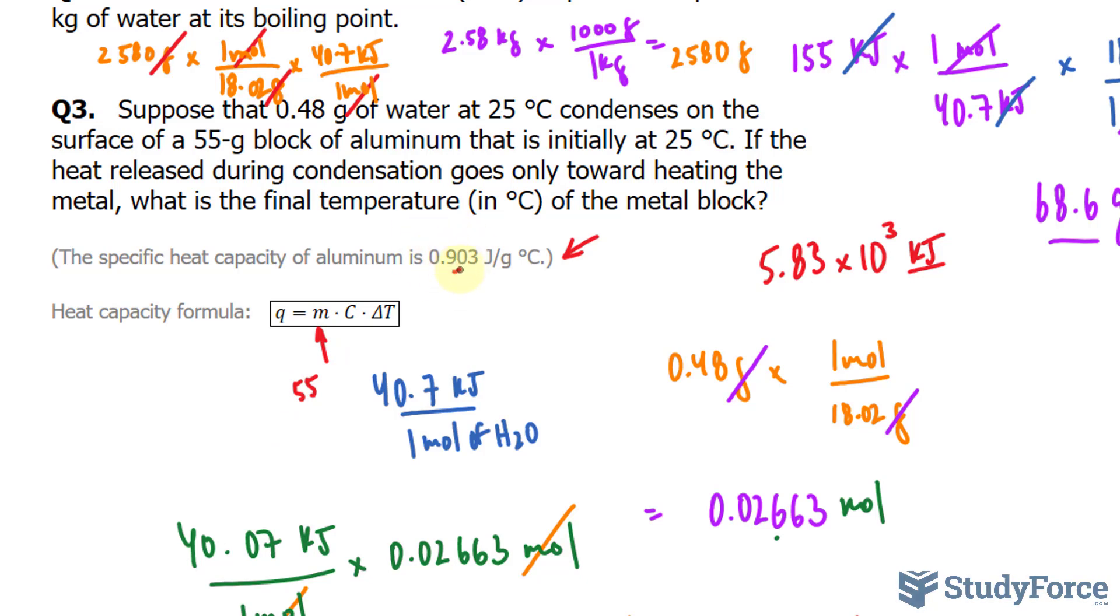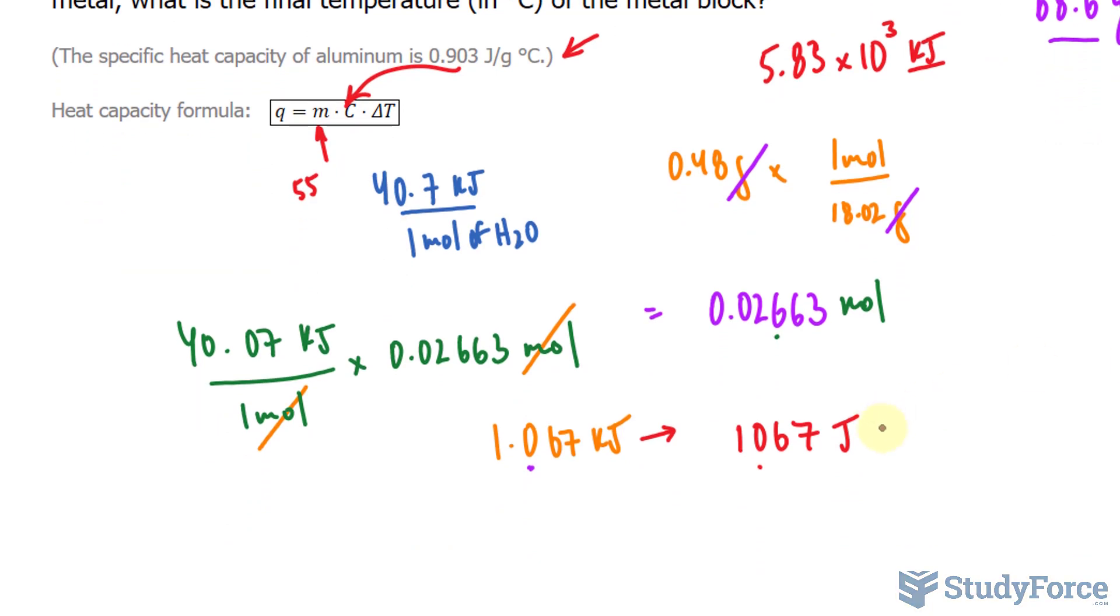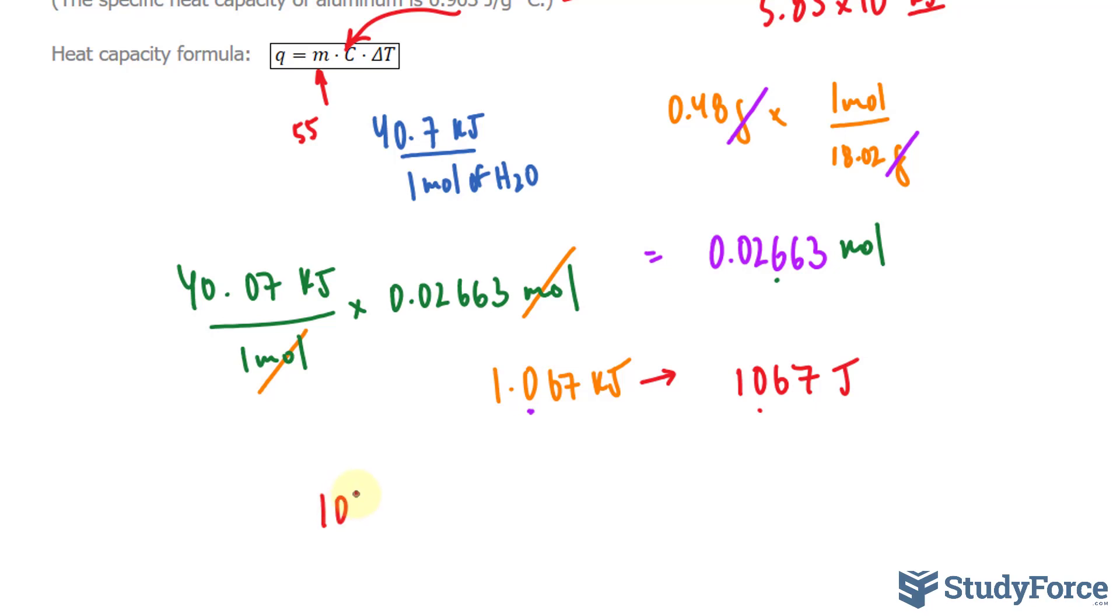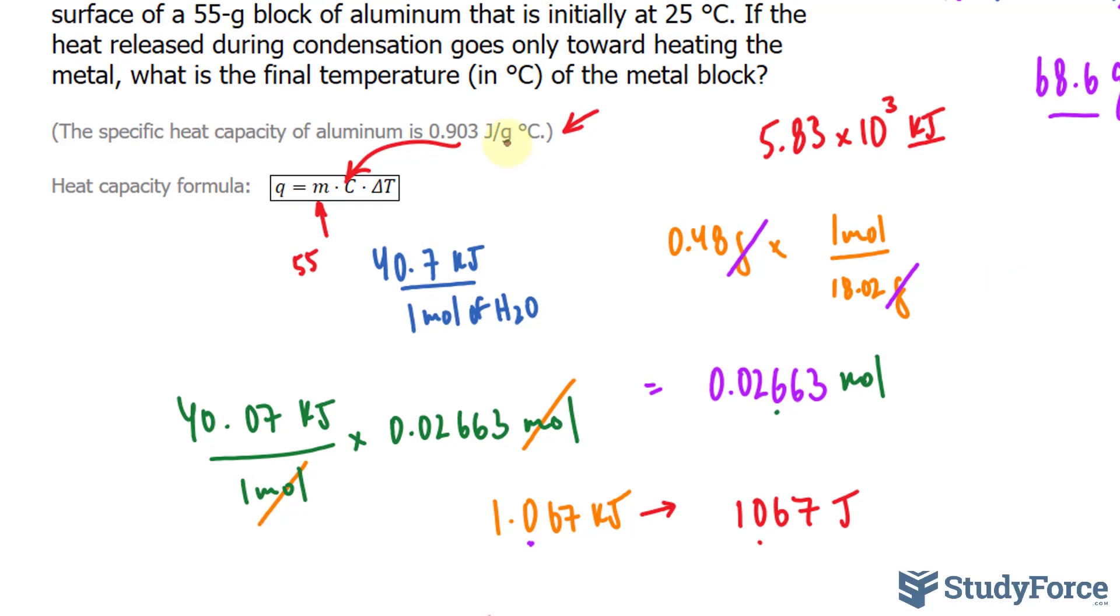We know that the aluminum is 55 grams. That will go here - two significant figures. We know the specific heat capacity will go here. And the energy lost by water, according to this question, goes directly into the metal. So the energy gained by aluminum is 1067 joules. Let's go ahead and replace all of that information. We're almost done. So we have 1067 equals 55 grams.